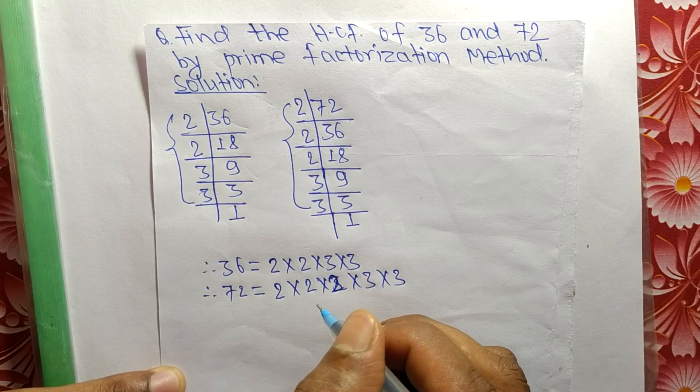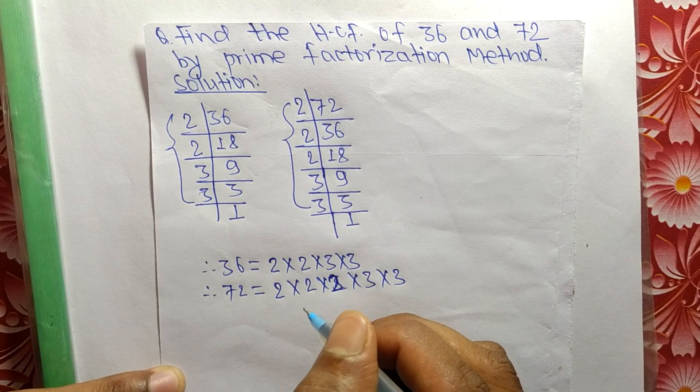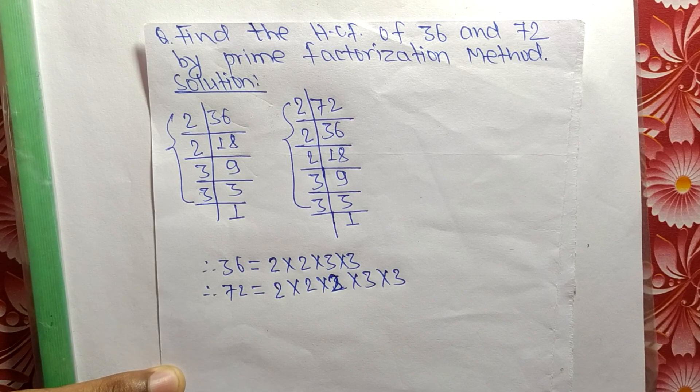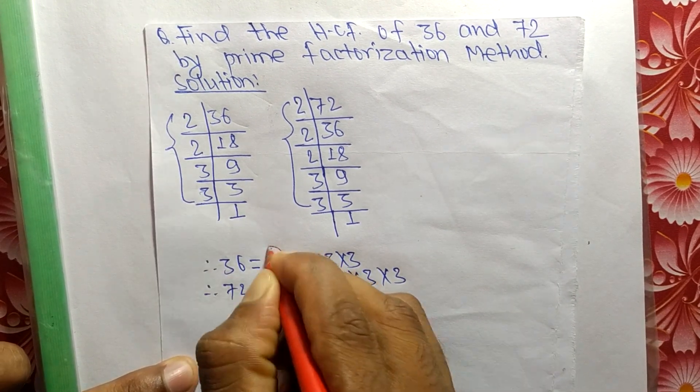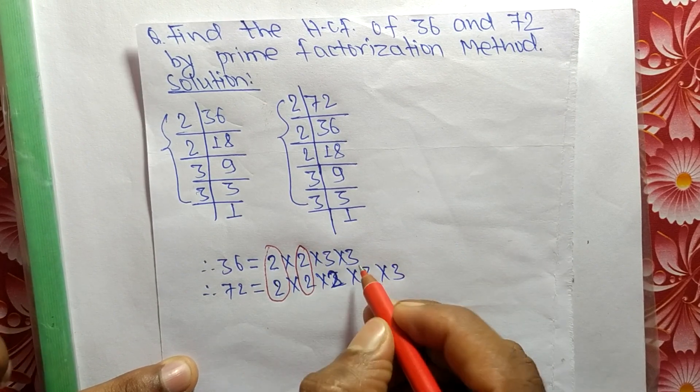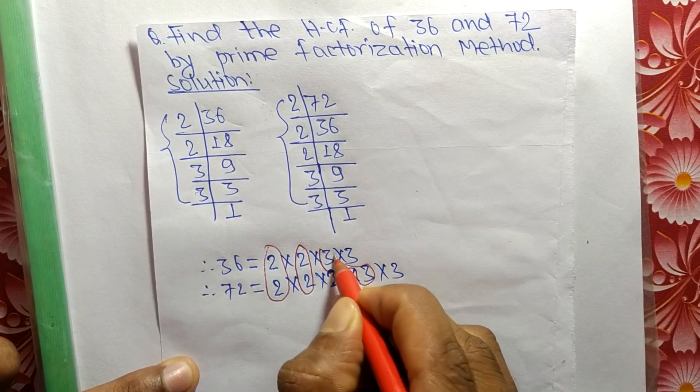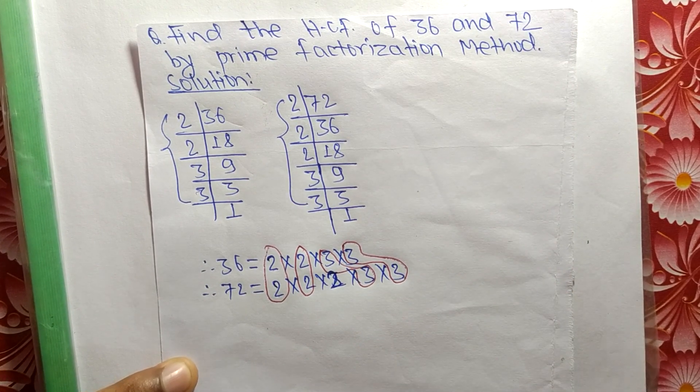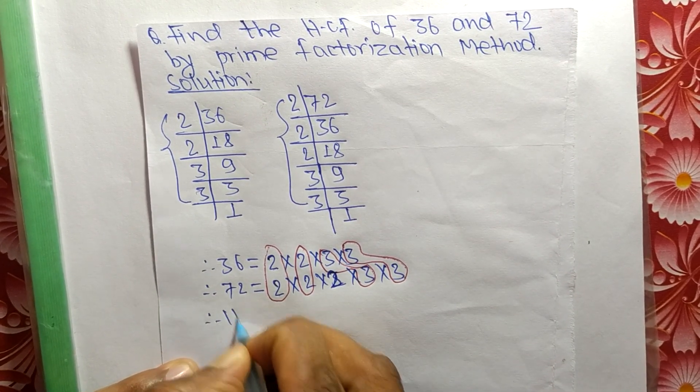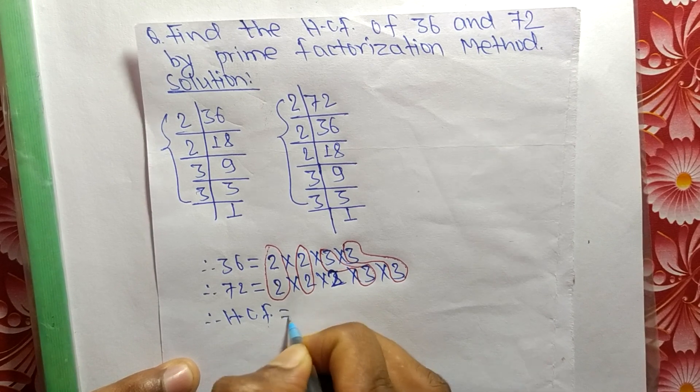From these prime factors, we now have to find the common factors. The common factors here are 2 and 2, as well as 3 and 3. So we can write HCF equals...